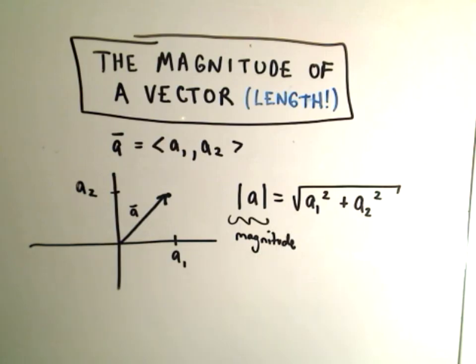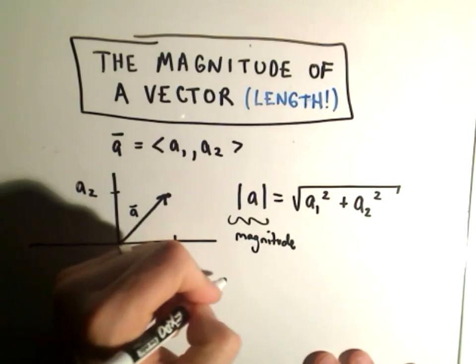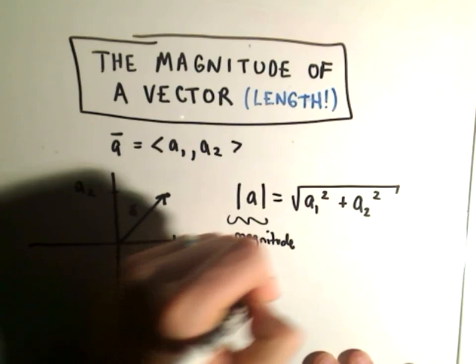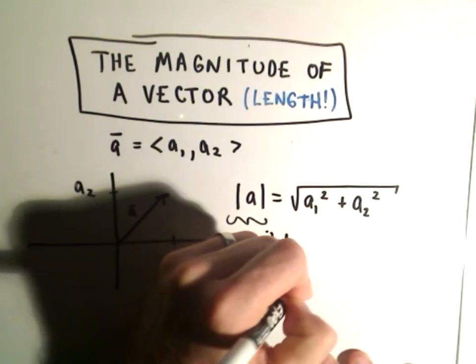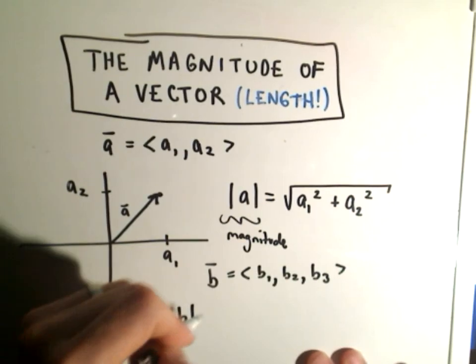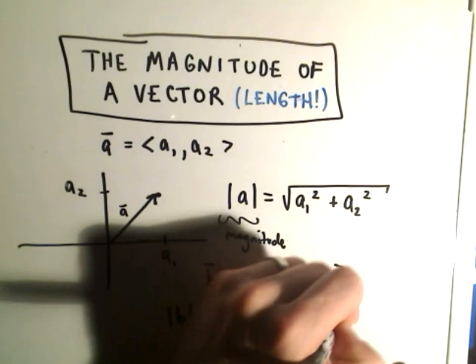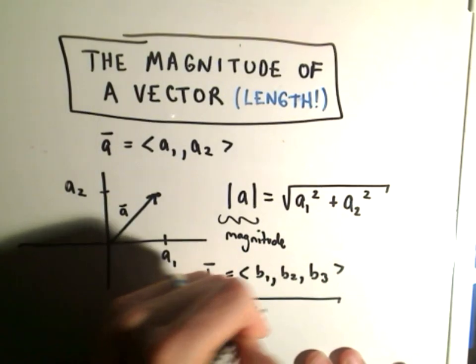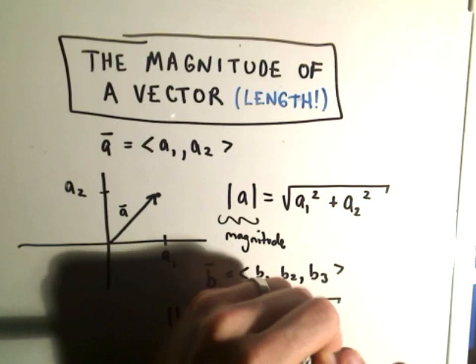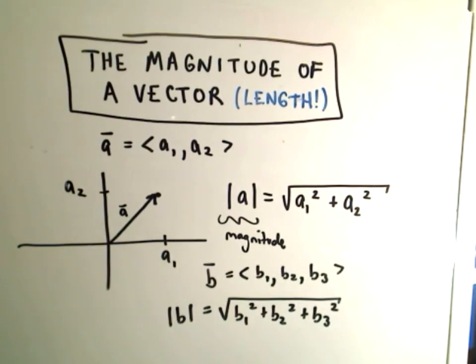And we would get the length of the vector. If your vector is three-dimensional, suppose vector B has components B1, B2, and B3. To figure out the magnitude, you do the same thing - take B1 squared plus B2 squared plus B3 squared. Just tack on an extra term underneath the radical.